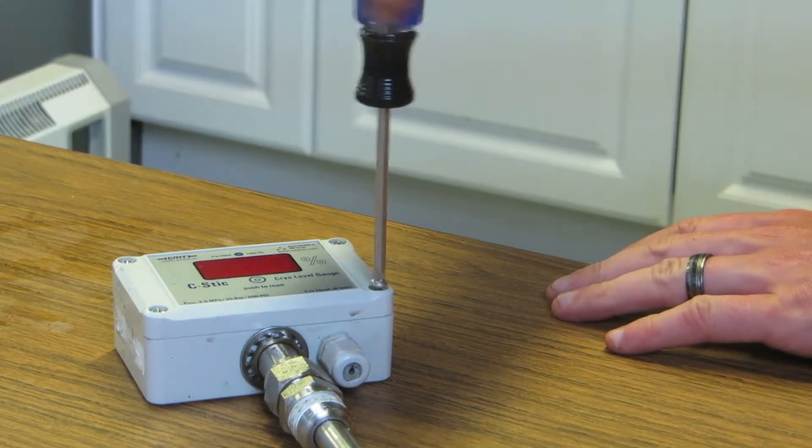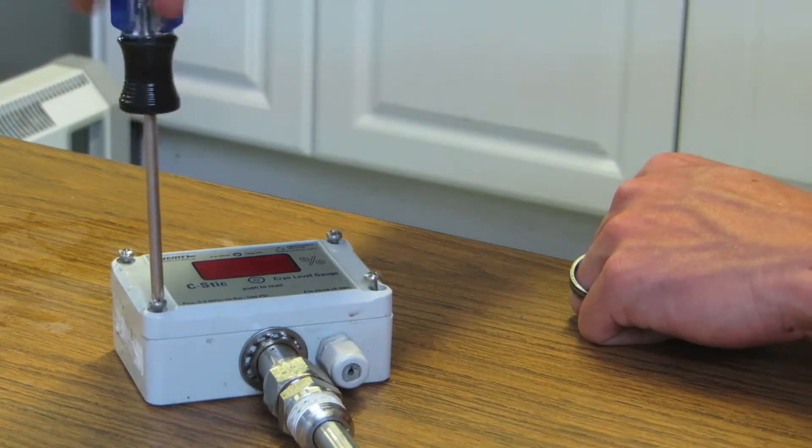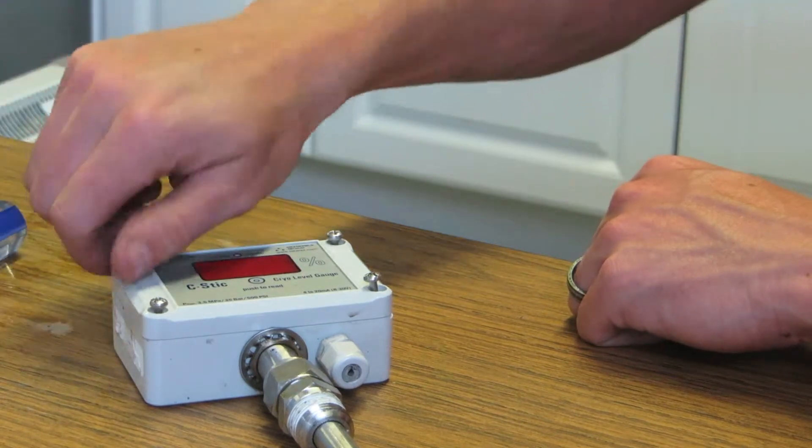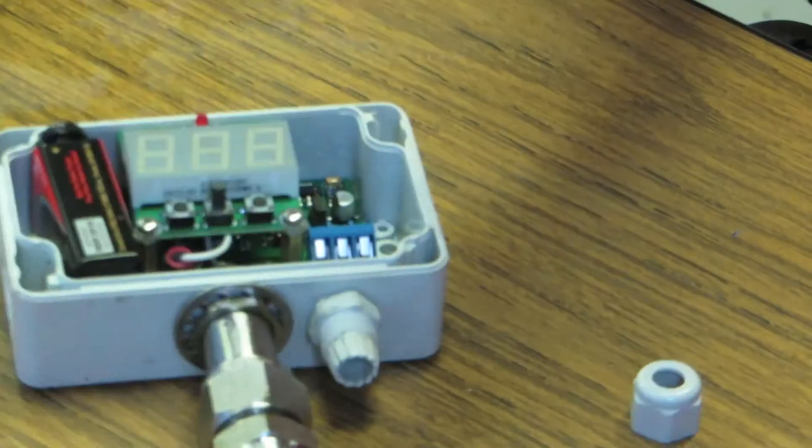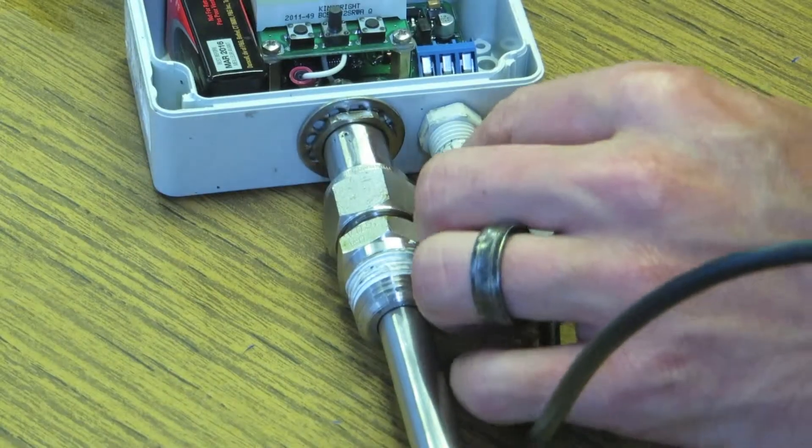The first thing you're going to need to do is remove the faceplate so that we can run our wiring harness into the C-Stick unit. I'm just going to go ahead and unscrew the cap off of this C-Stick output line and push the wiring harness up through into the C-Stick.